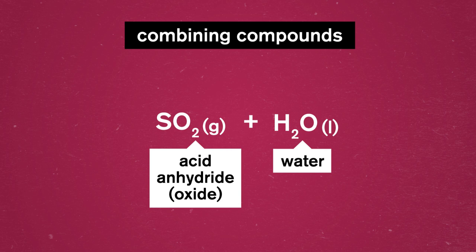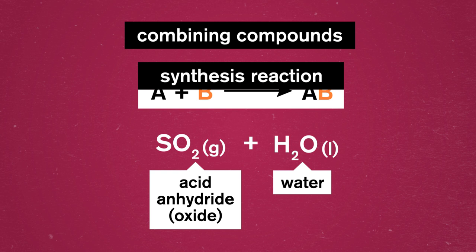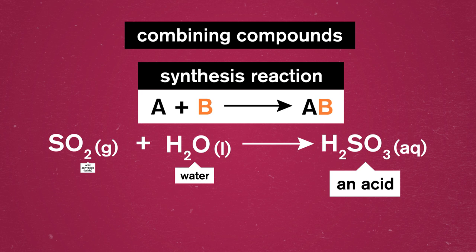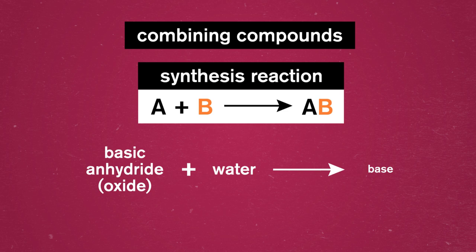Using our steps, we ID this as a synthesis reaction. Then, when we look at the reactants, we can pretty confidently guess that adding water back into an acidic anhydride makes it an acid again. Along those same lines, a synthesis reaction combining a basic oxide, or a basic anhydride, with water would form a base as the product. Both acid and base cases like these are simple, so we don't need the other steps, unless we want to confirm we'd balance correctly or something.